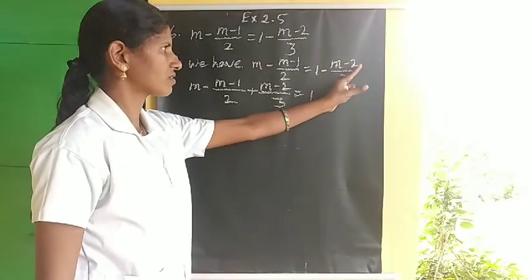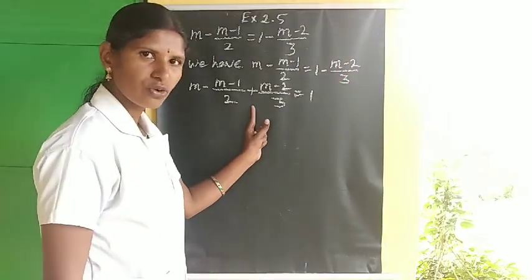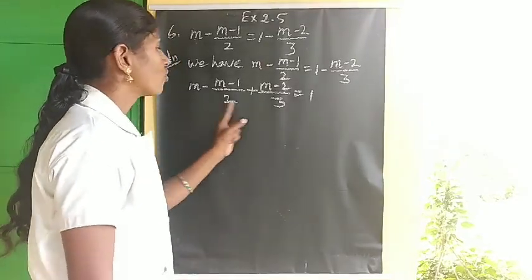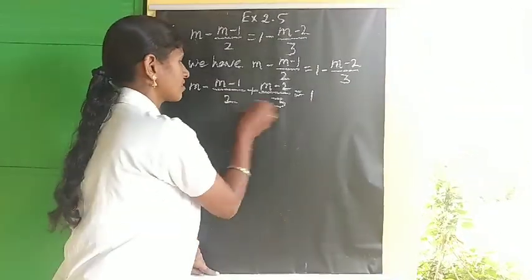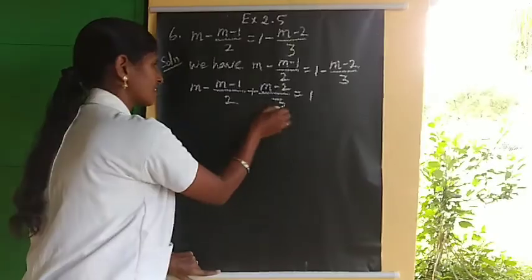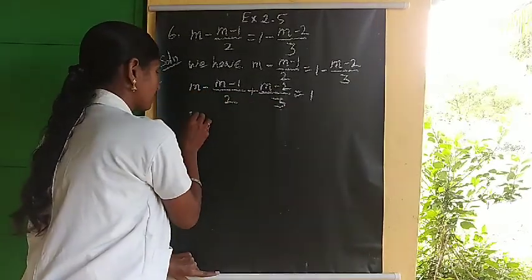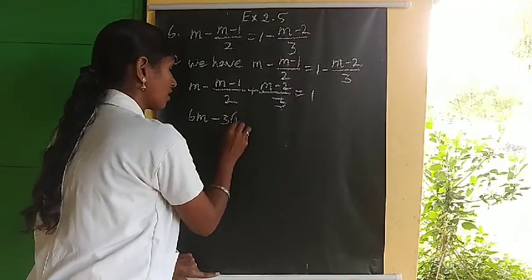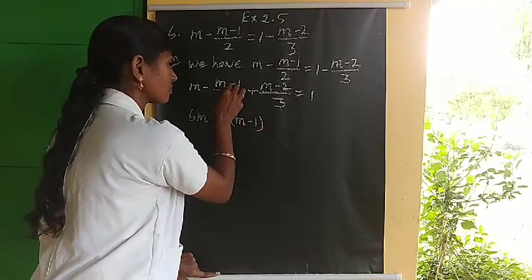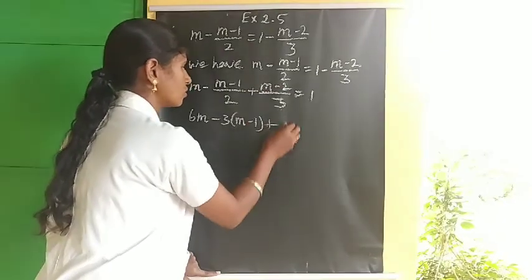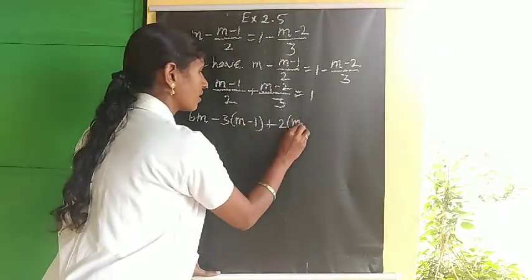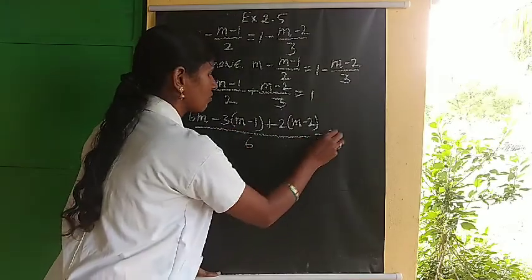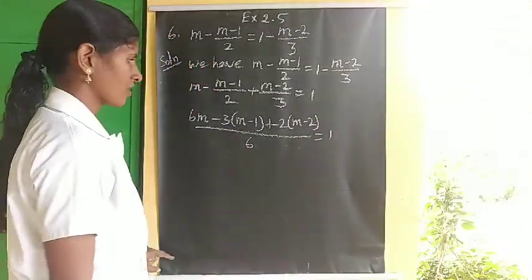With LCM of 6: multiply the first term by 6, second by 3, and third by 2. We get: 6M minus 3 times (M minus 1) plus 2 times (M minus 2), divided by 6, equals 1. Multiplying inside: 6M, minus 3M plus 3, plus 2M minus 4, divided by 6, equals 1.